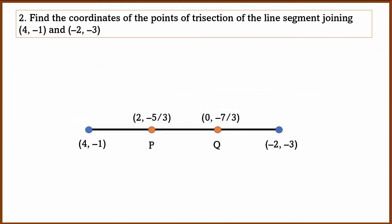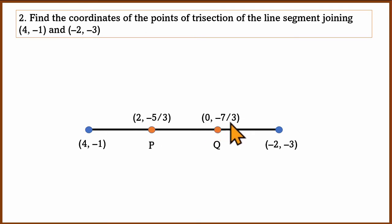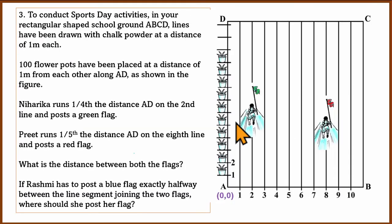We have two trisection points: P at (0, -7/3) and Q at (-5/3, -7/3) approximately. The section formula gives us both points, completing question 2.